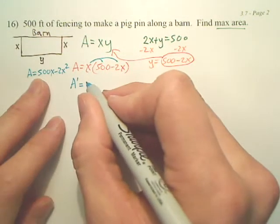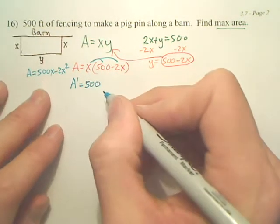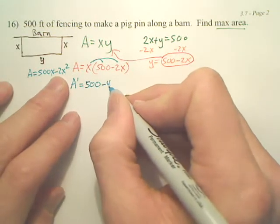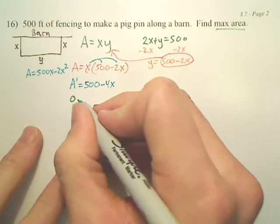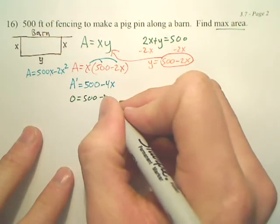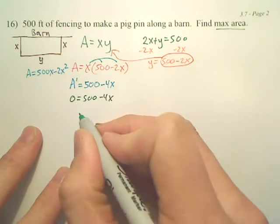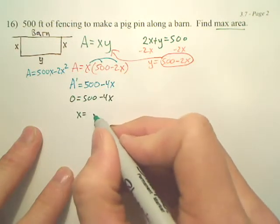So, A prime is going to be 500 minus 4x. If I set this equal to zero, because that's critical numbers, you end up with x equals 125.